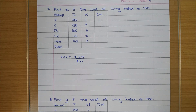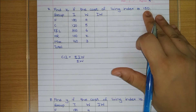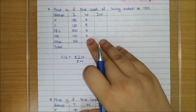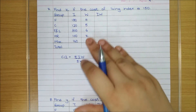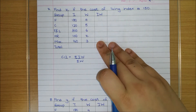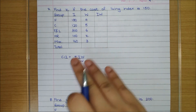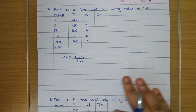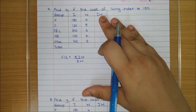In the 7th question, the cost of living index number is given as 150 and we have to find the missing value x. We will again calculate I·W, find totals for both columns, substitute in the formula, and then solve the linear equation.